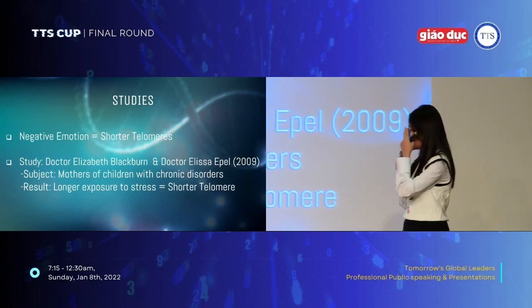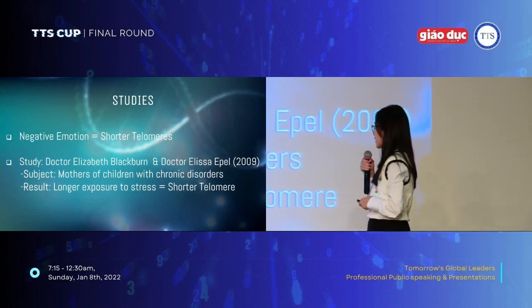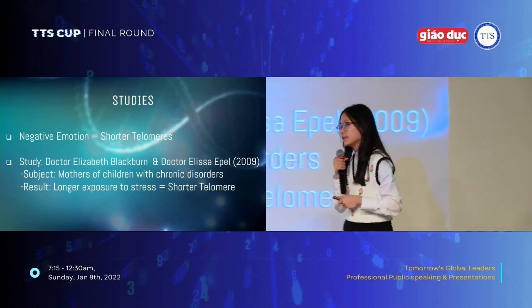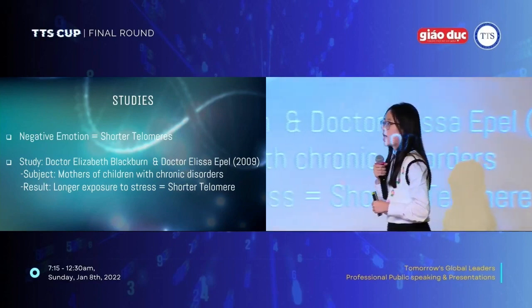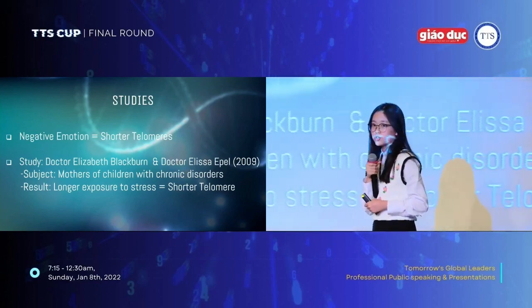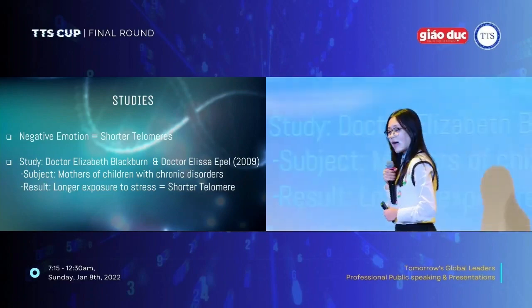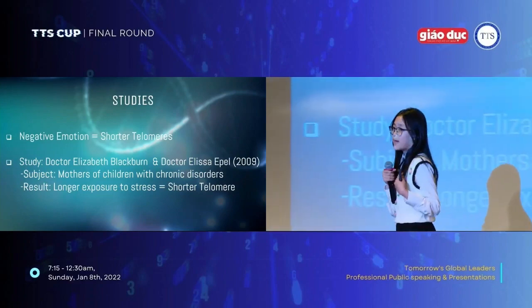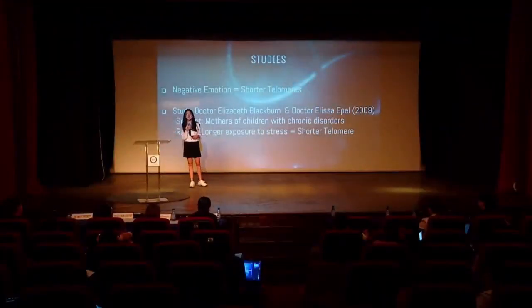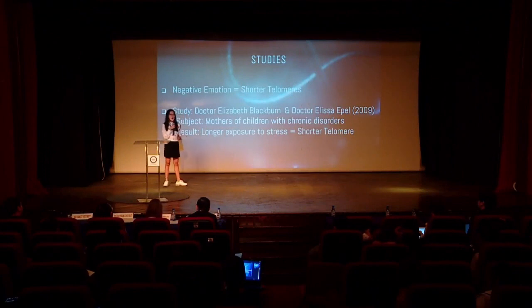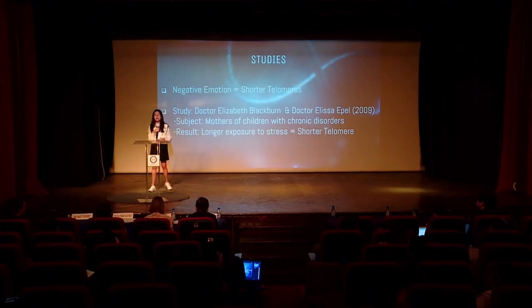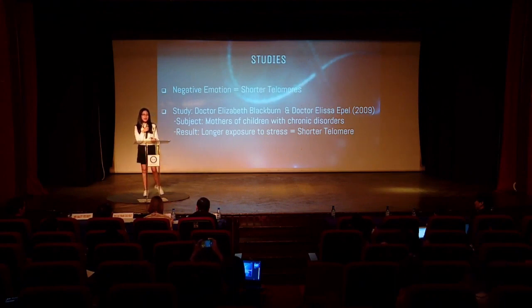Dr. Elizabeth Blackburn together with Dr. Alyssa Appel have been conducting research on a group of mothers with children with chronic disorders. The results indicated that the longer the mothers were exposed to stress, the shorter their telomeres became. But some in this group were special — they experienced no shortening of telomeres at all, because they were resilient to stress.